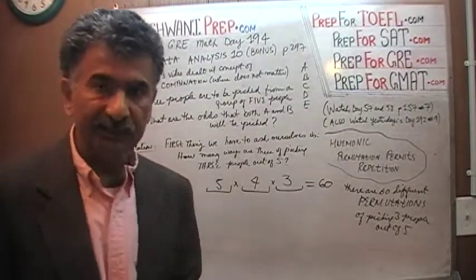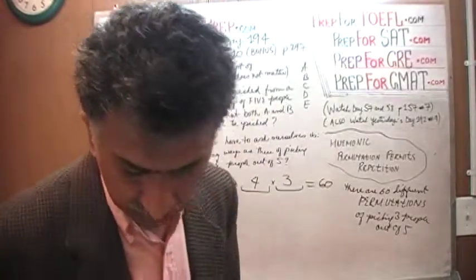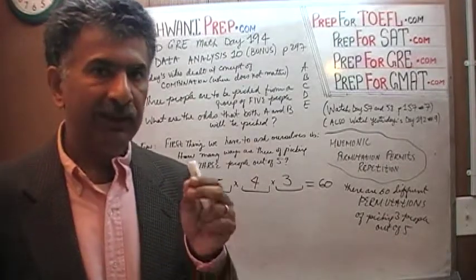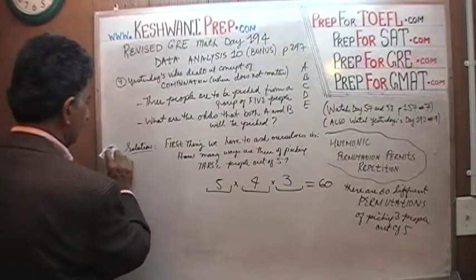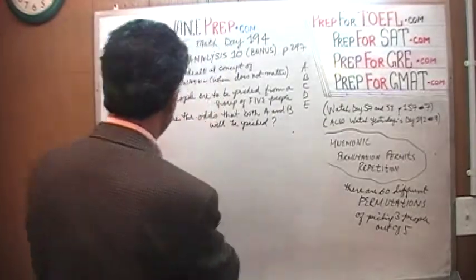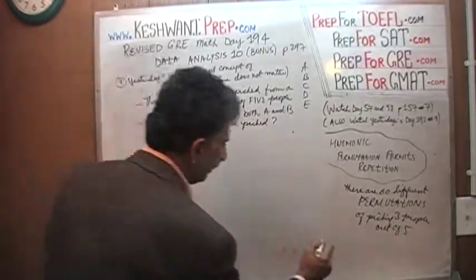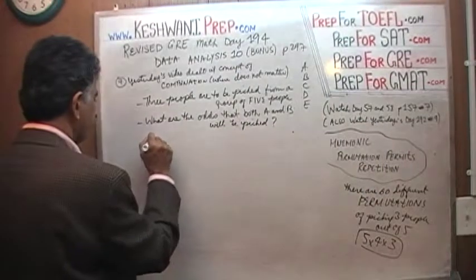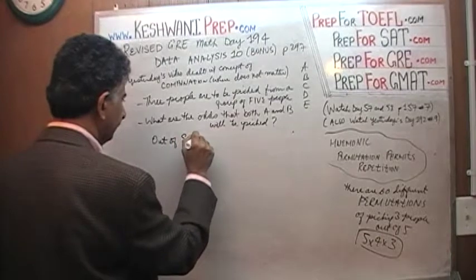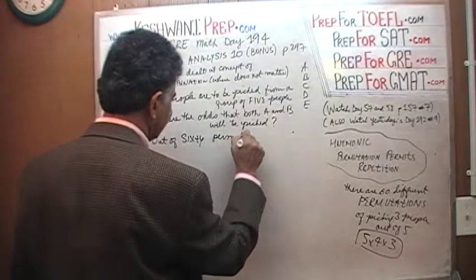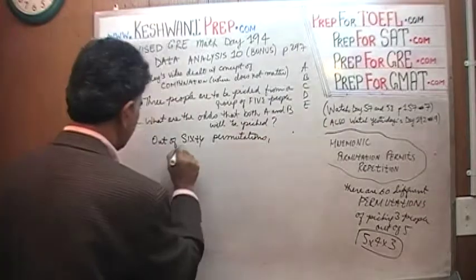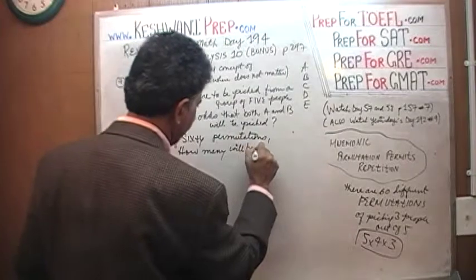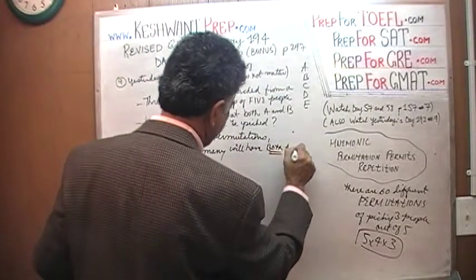So now we know there are sixty ways of picking three people. The next question we have to ask ourselves is: out of these sixty possible permutations, how many will have both A and B? That is the question — out of this sixty, five times four times three, how many will have both A and B?